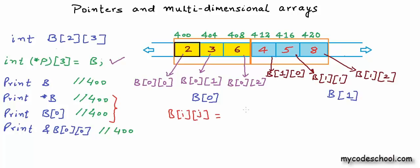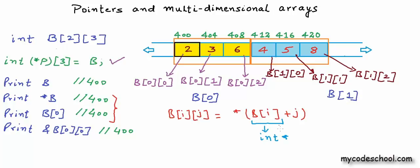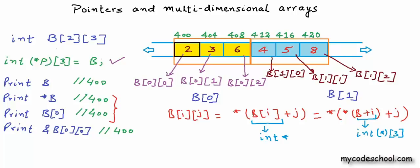We also saw that b[i][j] can be written as *(b[i] + j). If b[i] is a one-dimensional array, then b[i] returns an integer pointer to the first integer in b[i]. Adding j performs pointer arithmetic to get a pointer to the integer at index j in b[i], and then dereferencing gets its value. b[i] itself can be written as *(b + i). b is a pointer to a one-dimensional array of three integers, so b+i returns a pointer to a one-dimensional array of three integers, and dereferencing gives the one-dimensional array, whose name returns a pointer to the first element.